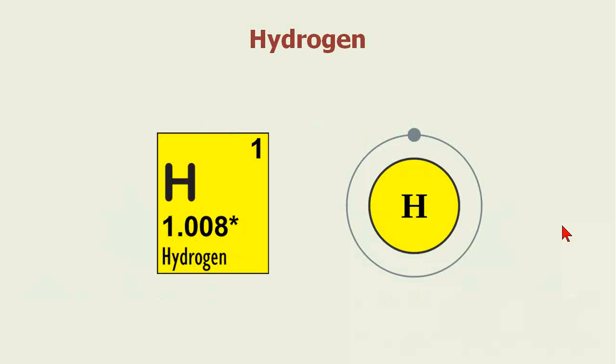Let's look at the easiest example, hydrogen. We know that it's simply a nucleus with a proton and an electron.